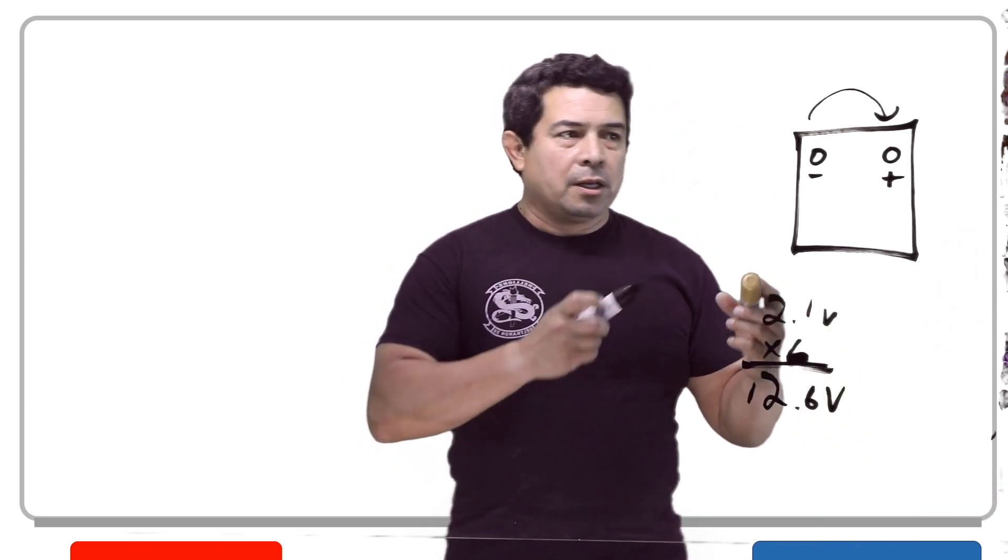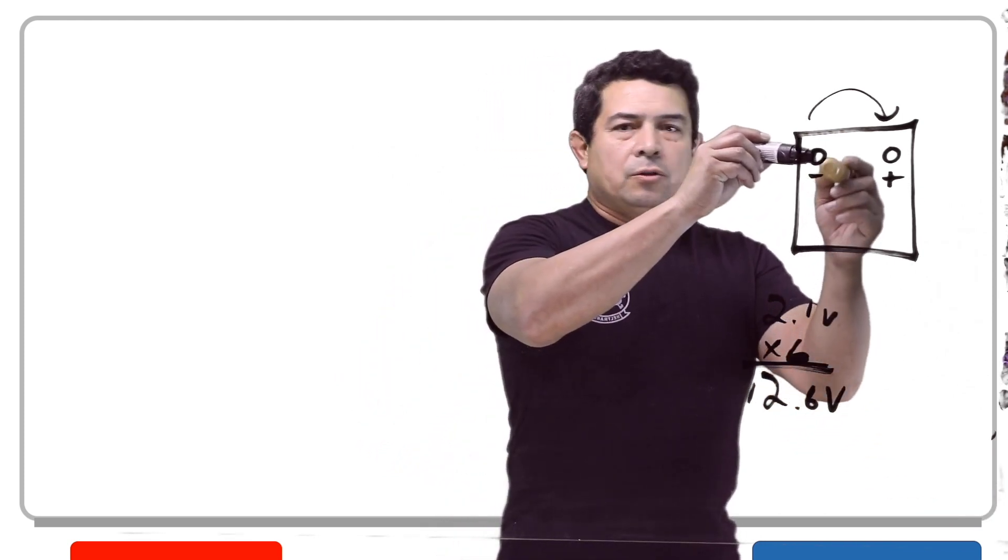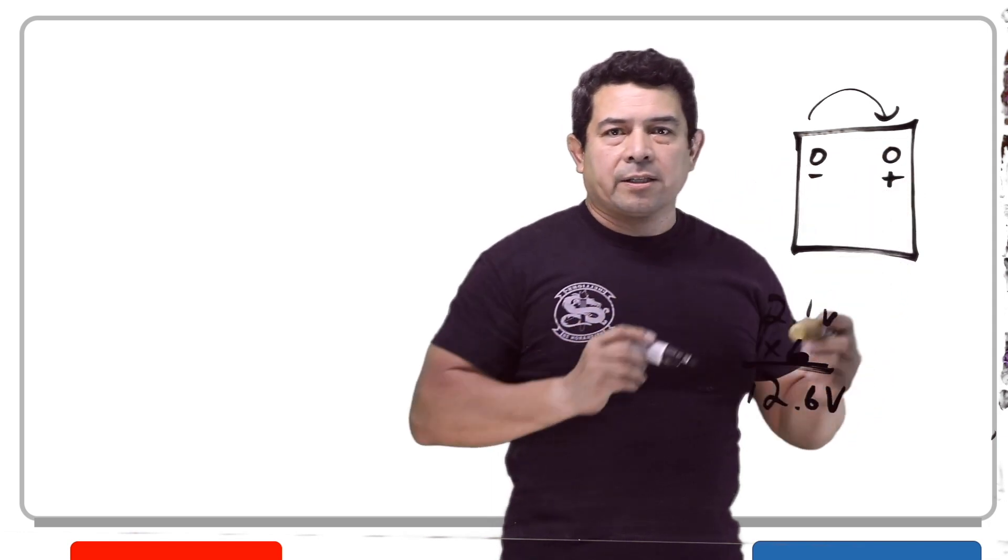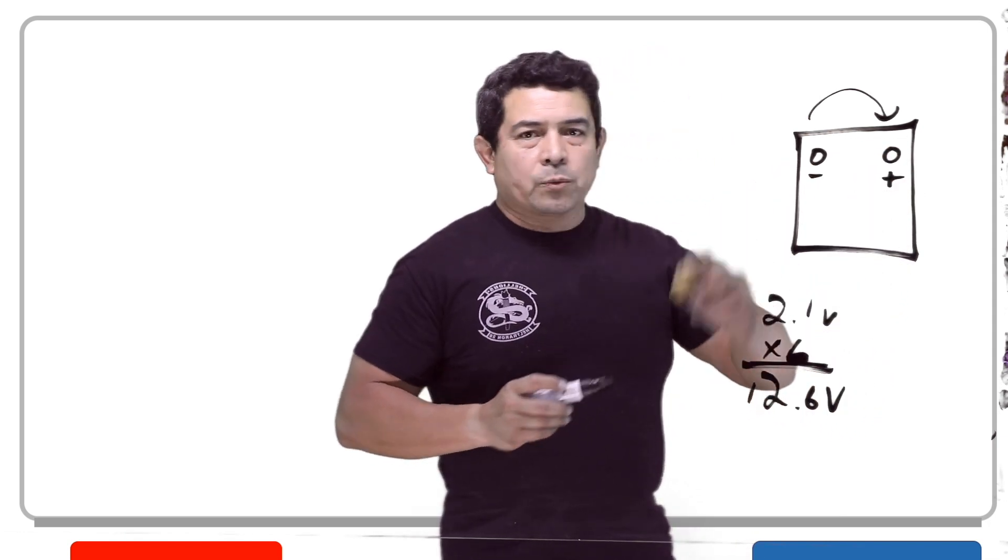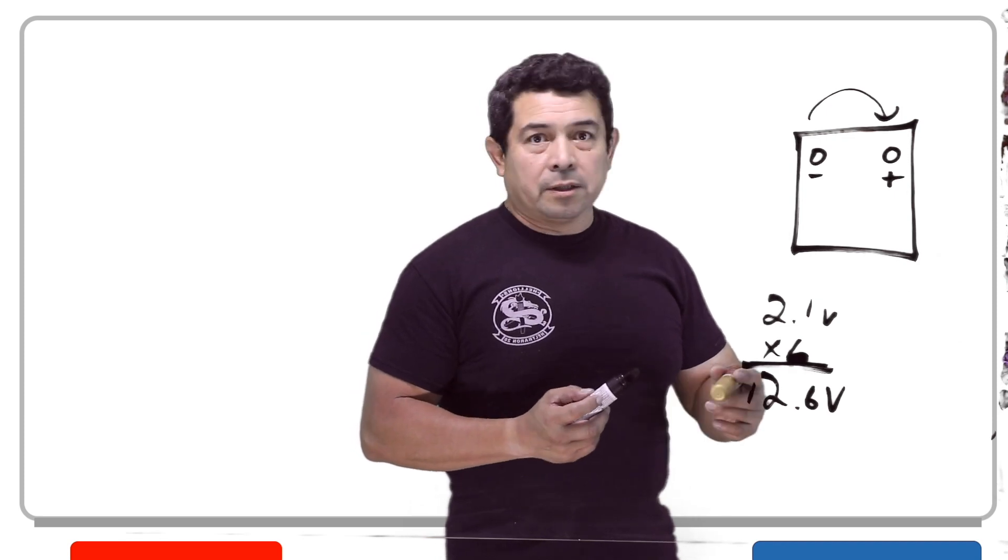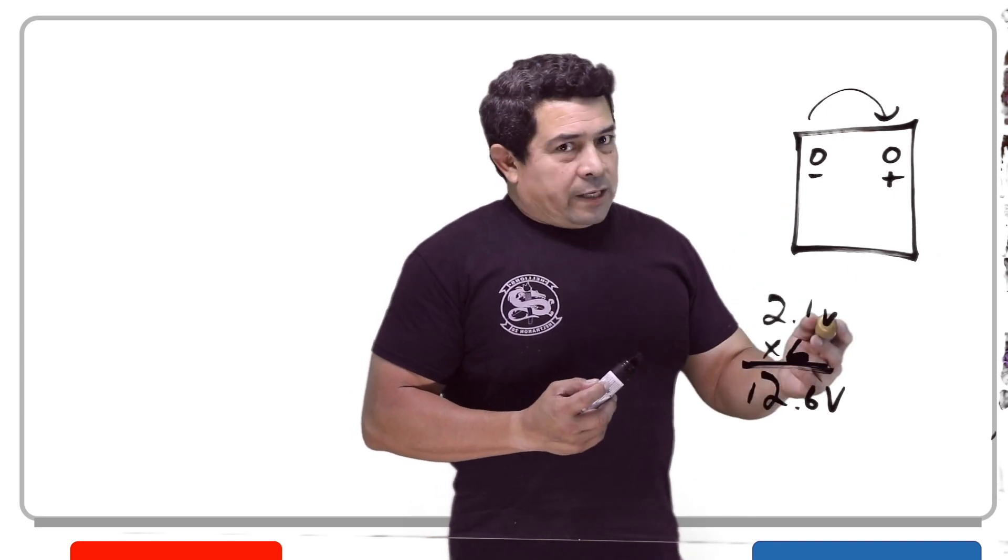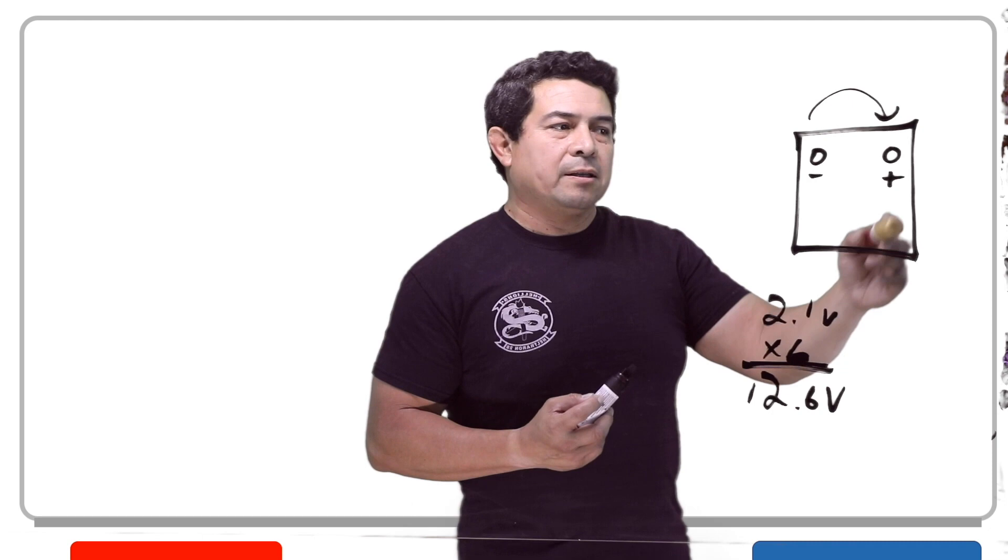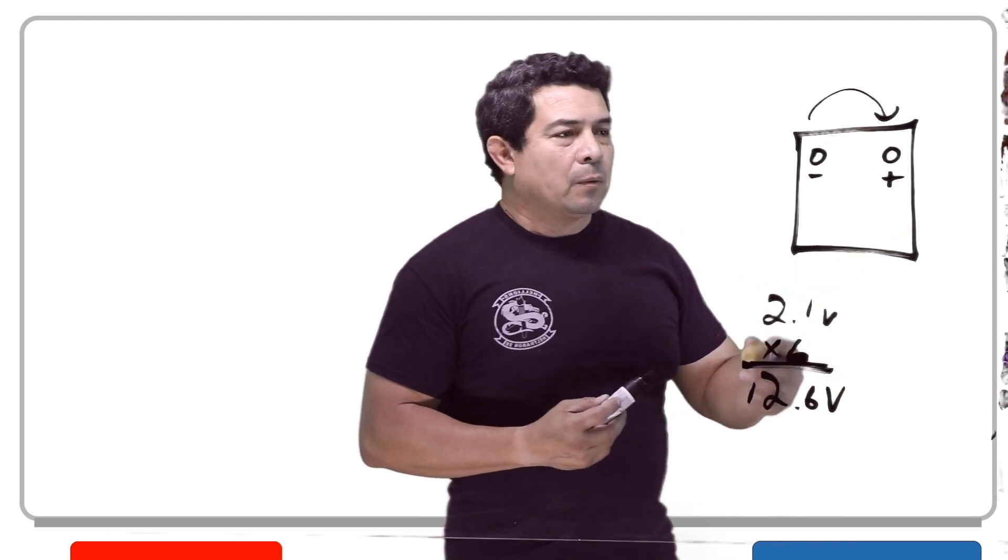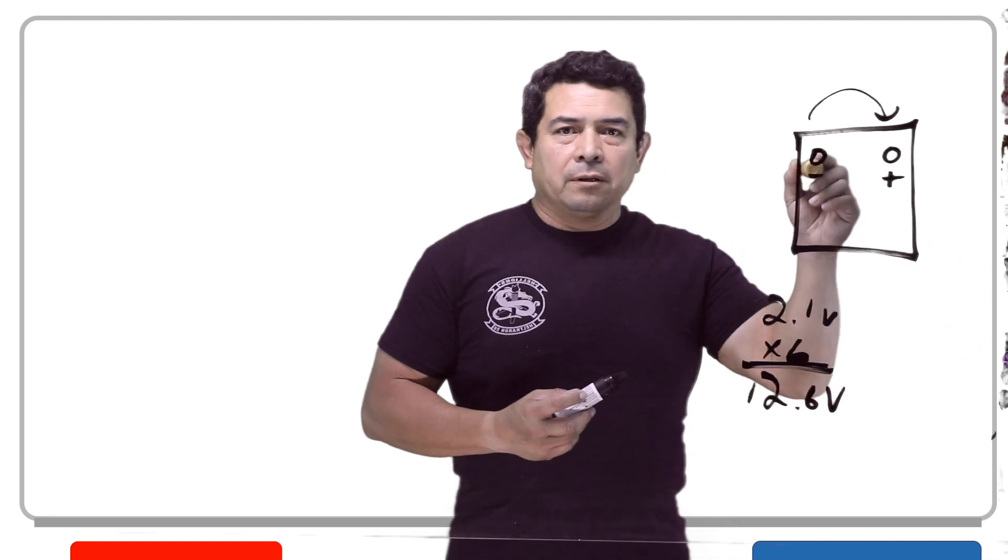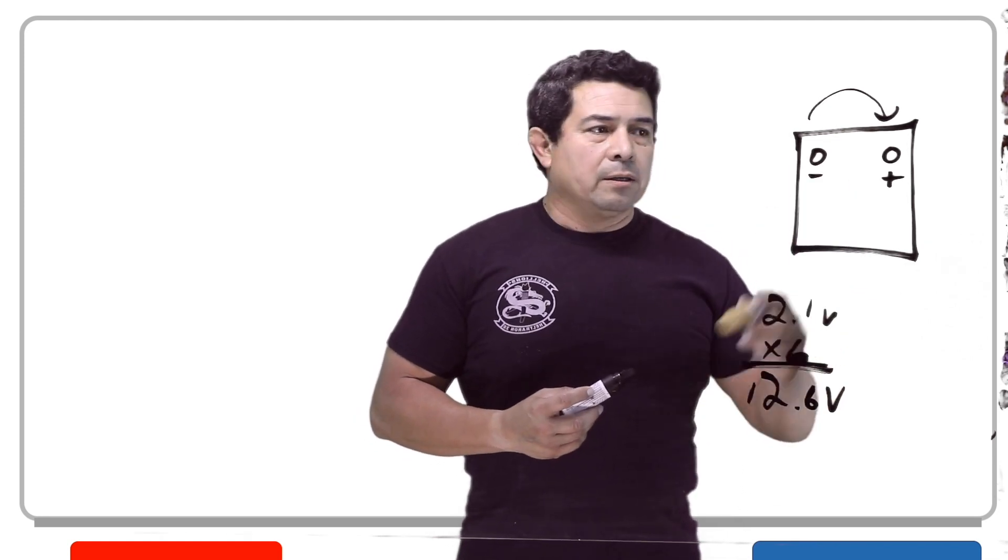One of the things that you could do is you could take your meter and go from either the negative to the casing or the positive to the casing. And if you get a reading, then that's where your parasitic drain is. It may sound crazy because the battery is plastic, so why or how could this happen? Well, you get leakage of the fluid that's inside onto the casing.